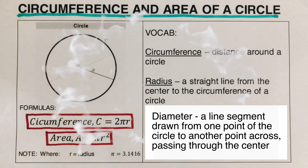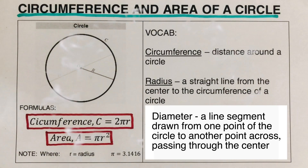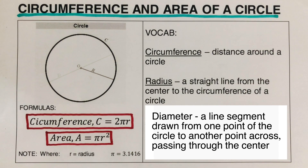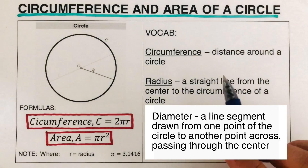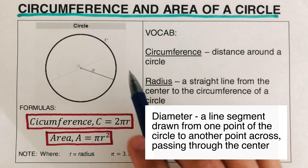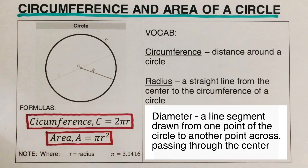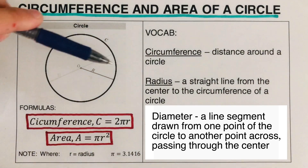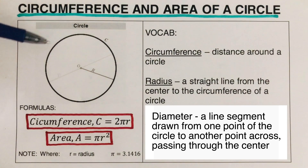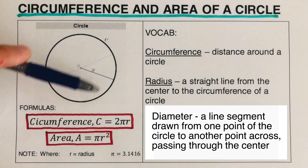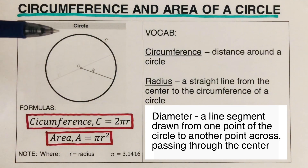Hello everyone! Today we're going to cover the circumference and area of circles. There are some terms we need to define first. Circumference is the distance around the circle.